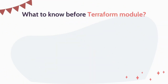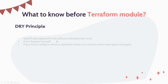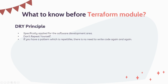The first thing to understand is why we need Terraform modules and what you need to know before working on them. You need to know what exactly the DRY principle is. DRY principle is specifically applied in software development. If you've heard about design patterns — like the KISS pattern or the DRY pattern — DRY stands for 'Don't Repeat Yourself.' If you have a pattern that is repetitive in nature, there's no need to write that code again and again. It aims at reducing repetition of patterns and code duplication in favor of abstraction and avoiding redundancy.